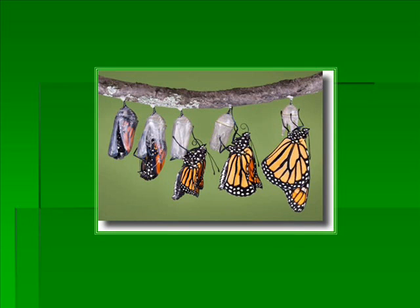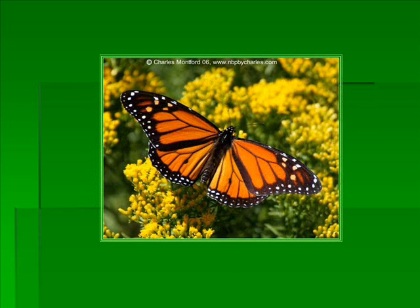When the pupa has finished changing, it molts one last time and emerges as an adult butterfly. The adult emerges with its wings folded up against its body. The butterfly must wait to pump blood into the wings so it can expand them. The adult stage is when butterflies mate and reproduce.